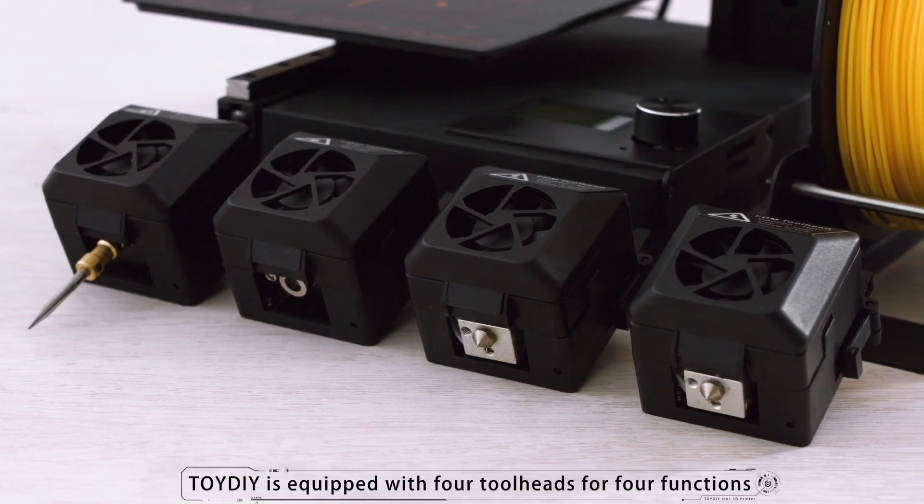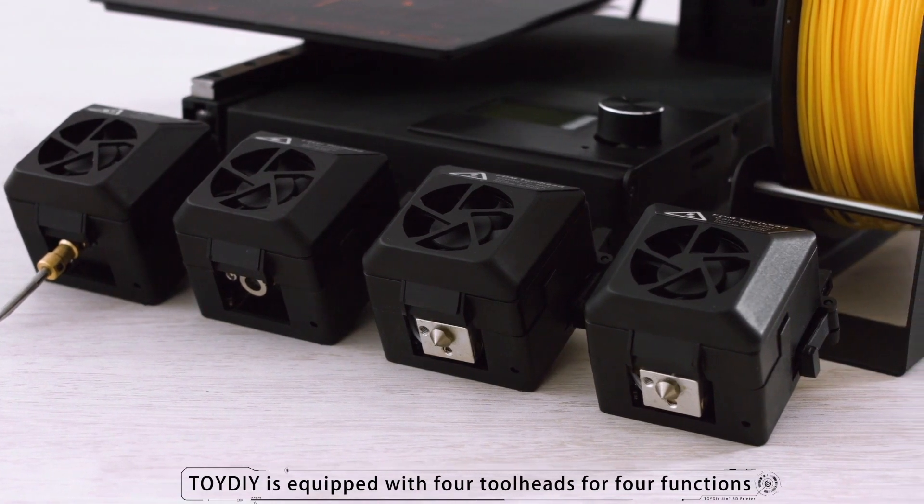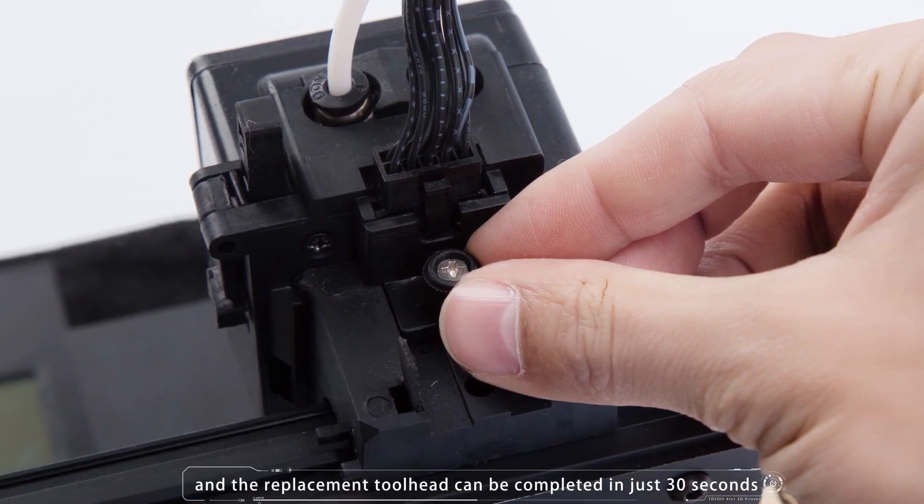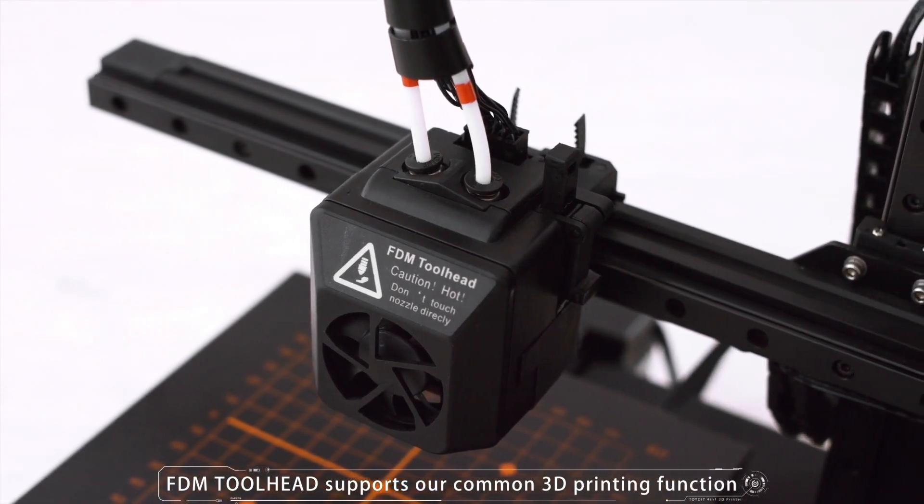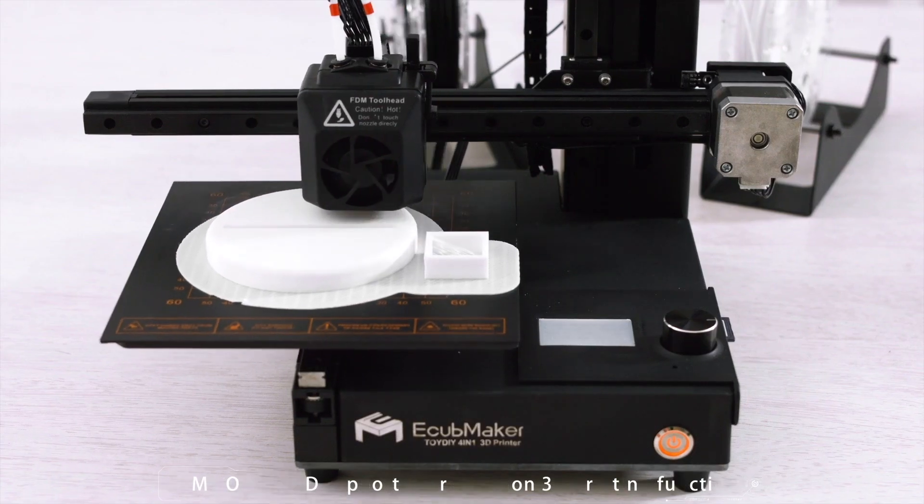ToyDIY is equipped with four toolheads for four functions, and the replacement toolhead can be completed in just 30 seconds. The FDM toolhead supports our common 3D printing function.